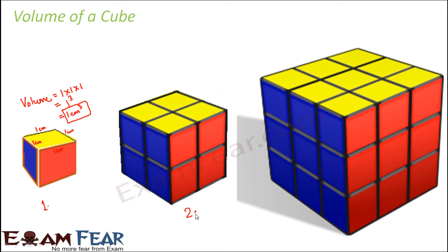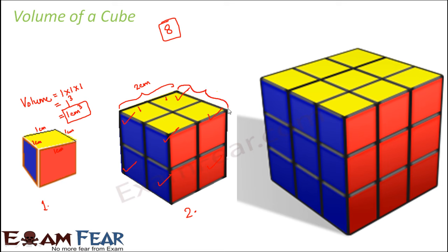In the second scenario, instead of one cube we have multiple small cubes. Counting them: cube 1 through cube 8, so we have a total of eight cubes. Together, these eight cubes form a bigger cube, because now the length of each side is 1 + 1 = two centimeters. The volume of this cube is 2 × 2 × 2, that is 2 cubed, which equals eight centimeter cube.